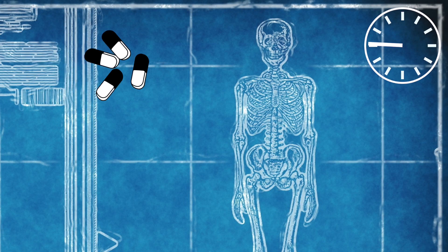So in essence, in every cell in each of our bodies, we have a basic blueprint which tells us which drugs are effective for which conditions and how we might be able to predict things such as side effects.